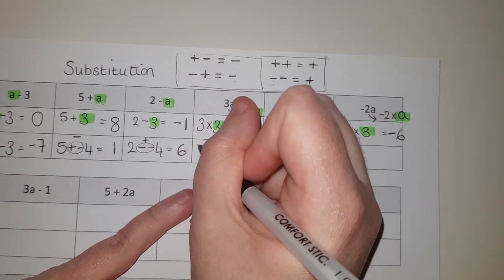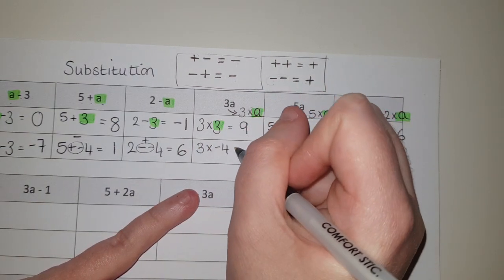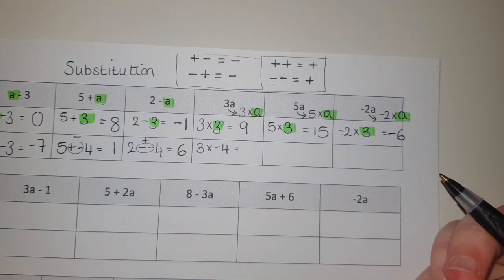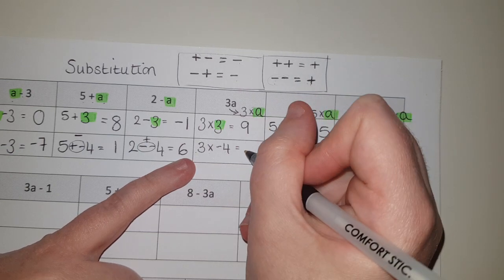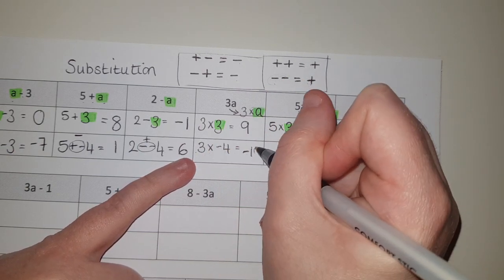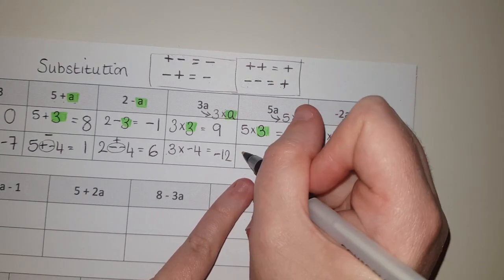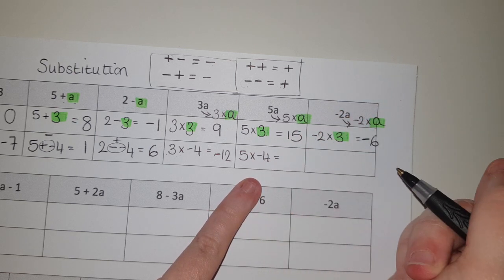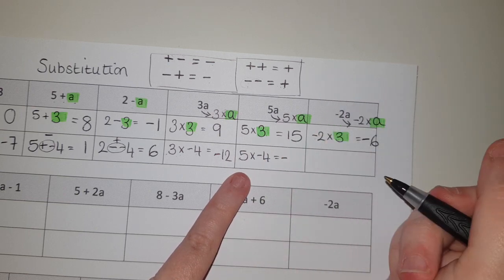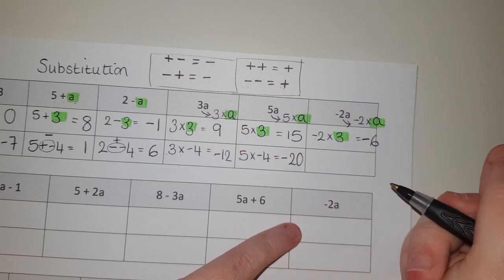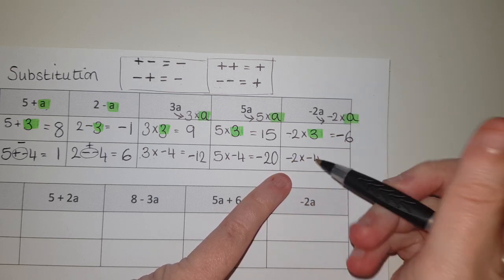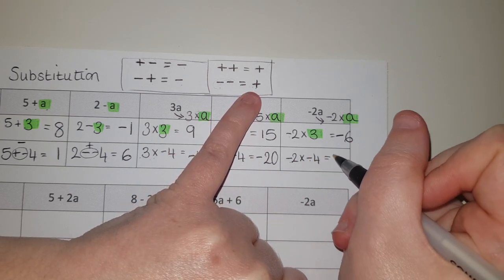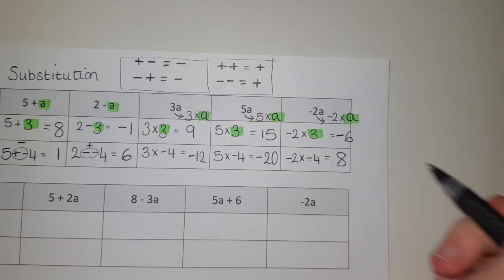3A means we're doing 3 multiplied by, and our A value this time is minus 4. We've got a positive number multiplied by a negative, so the answer is going to be negative — 3 multiplied by 4 is 12, so the answer is minus 12. For 5A: 5 multiplied by minus 4 — positive times negative is negative — 5 times 4 is 20, so the answer is minus 20. And then our last one, the trickiest of all: minus 2 multiplied by minus 4. A negative multiplied by a negative gives a positive, so 2 times 4 is 8 — my answer is positive 8.